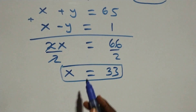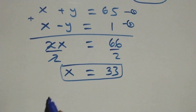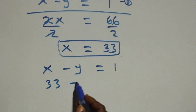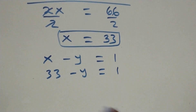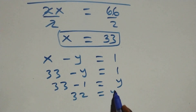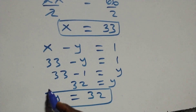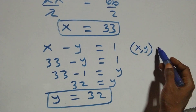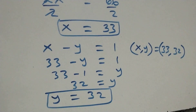To find y, we use equation 2: x minus y equals 1. Substituting x equals 33 gives 33 minus y equals 1, so 33 minus 1 equals y, which means y equals 32. So the first solution is x comma y equals (33, 32).